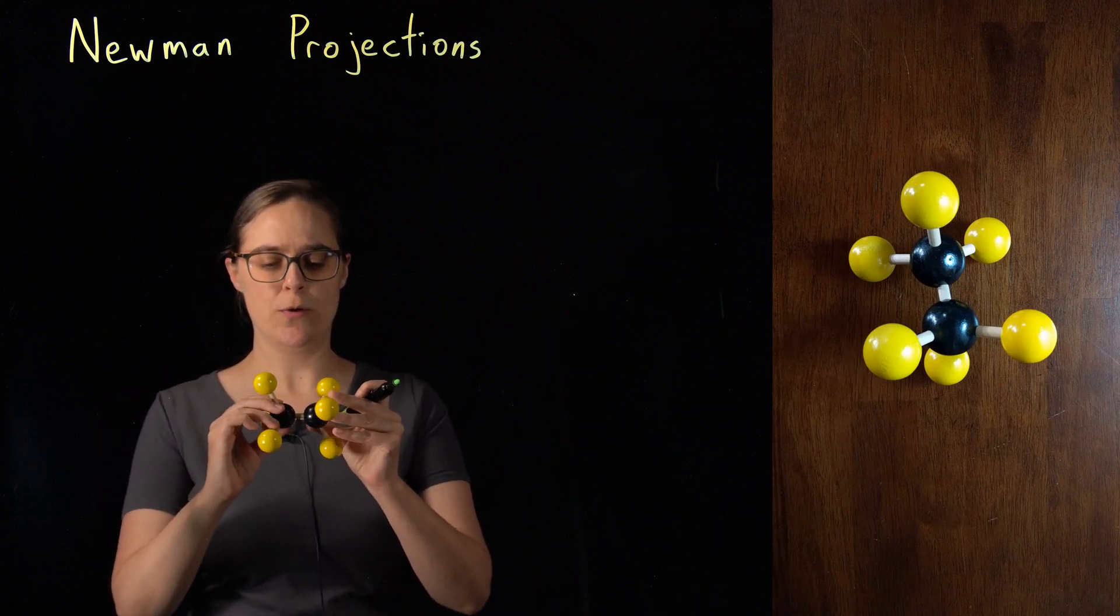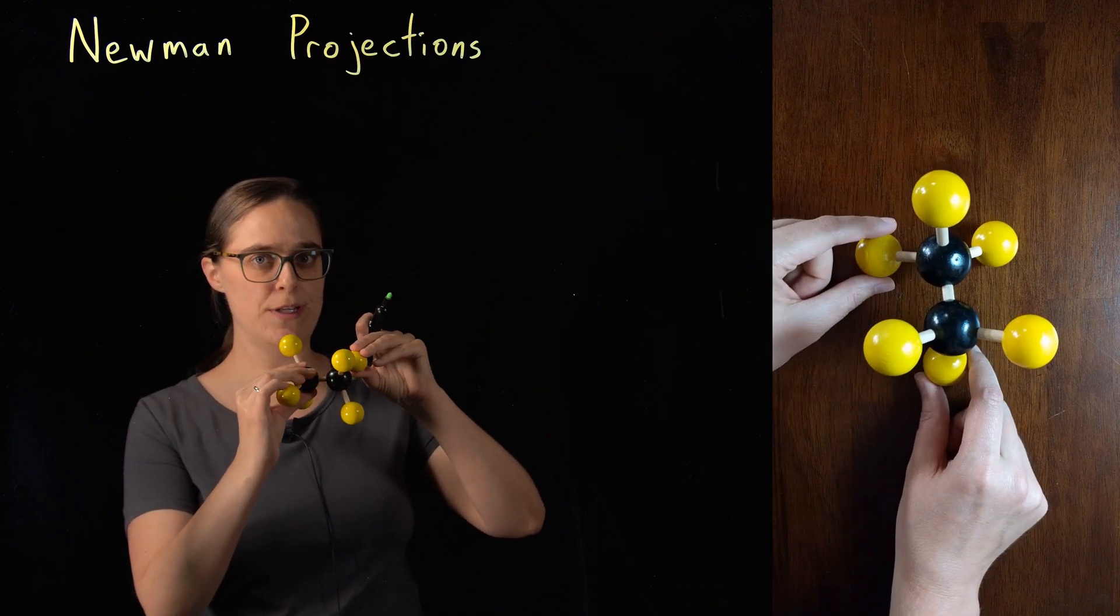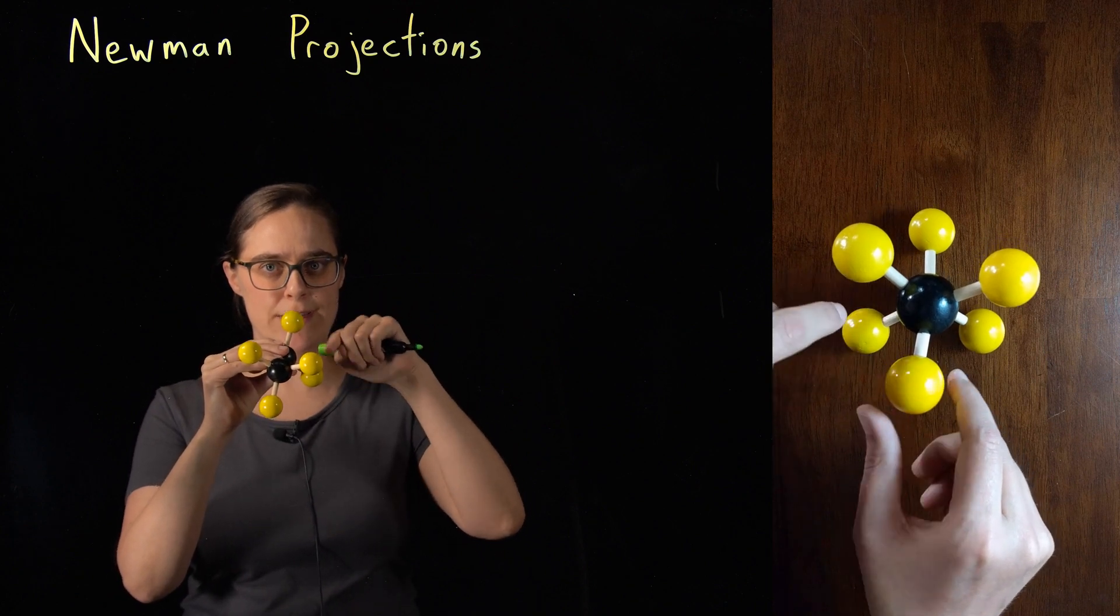So in this molecule, we are concentrating on this carbon-carbon bond. I am always going to need to rotate the molecule so that our bond of interest is in our line of sight.